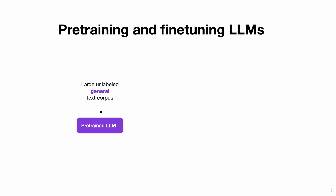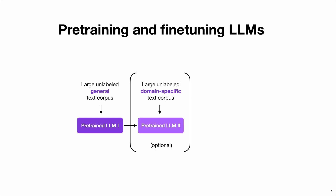Before I start the talk, just briefly setting the stage here with the pre-training and fine-tuning pipeline that we usually use for LLMs. An LLM usually starts with a large unlabeled general text corpus — the pre-trained LLM or foundation model — that's usually something we download from a model hub. And then if we have a specific domain problem, for example in medical or finance, we might want to train the LLM further on domain-specific data.